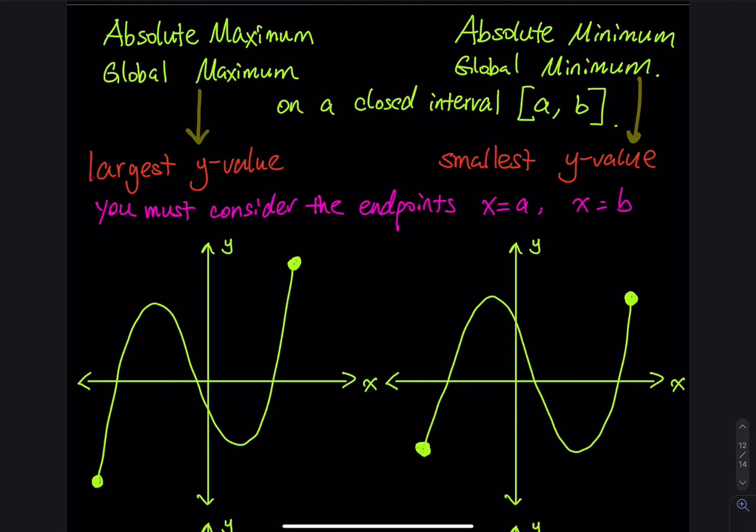This video is about the basic concept of absolute maximum and absolute minimum, also known as global maximum and global minimum. When we talk about absolute max and absolute min, we have to look at a closed interval. Since we are talking about a closed interval, I put a square bracket to wrap a and b.